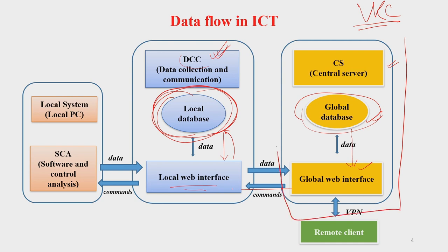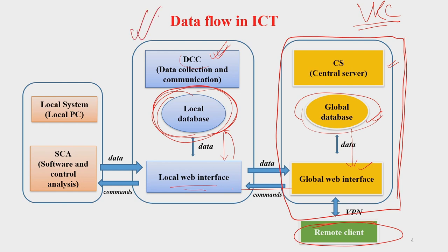The right-hand side part is outside your local system and works through a remote client like VPN. On the left-hand side you have the local PC — suppose you are sitting in a village knowledge center. From your local web interface, information goes to the software control system, and after it is processed, it comes back to the local web interface and into the local database. This is how data flows within a standard ICT system.